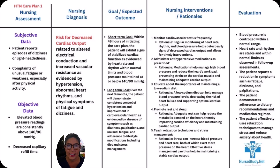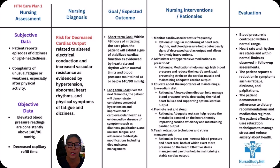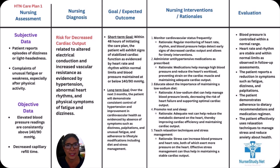The objective data — what you can see or record — includes elevated blood pressure consistently above 140 over 90 millimeters of mercury, and decreased capillary refill time. The nursing diagnosis is: risk for decreased cardiac output related to altered electrical conduction and increased vascular resistance, as evidenced by hypertension, abnormal heart rhythms, and physical symptoms such as fatigue or dizziness.